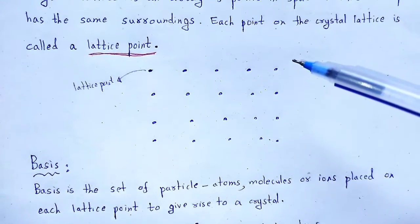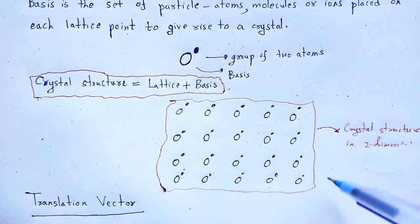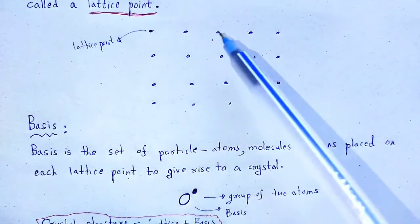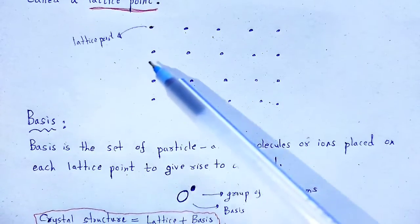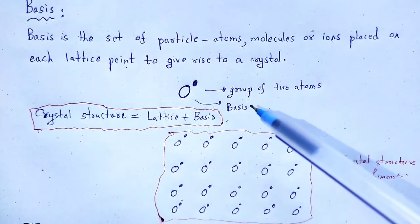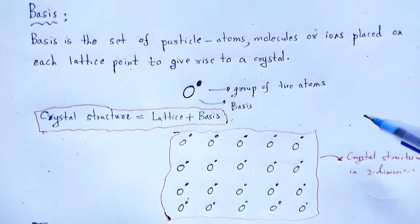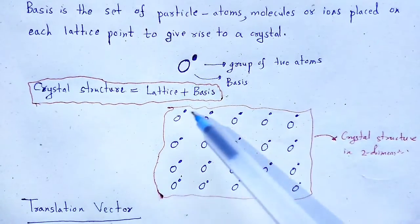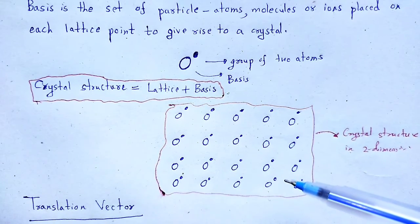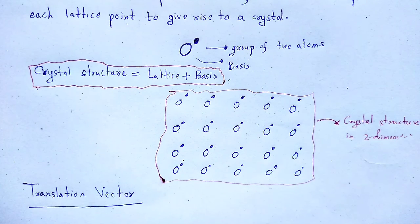We can relate this by taking the example of a classroom. If there is a classroom with tables for students, those tables represent the lattice points. Each individual student represents the basis. When the students are at their own tables, we obtain the crystal structure. The tables are the lattice points, the students are the basis, and when students are at their own tables the classroom is filled with students — that is the crystal structure: lattice point, basis, crystal structure.